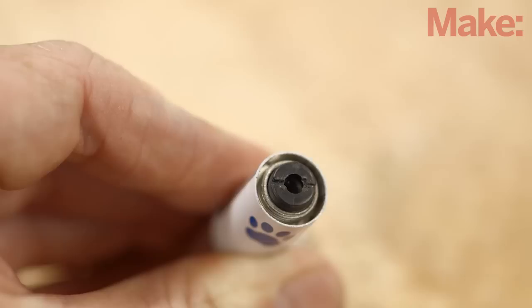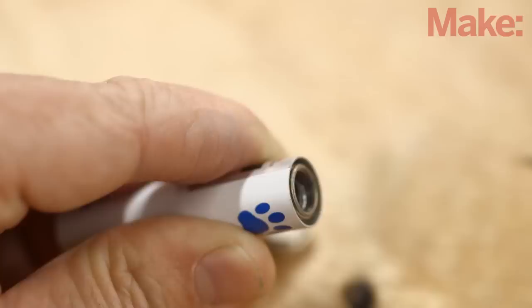To get the lens from the laser pointer, start by unscrewing the front cone of the laser. The front of this assembly is where the focus lens sits. Unscrew the small black plastic retainer in front of the lens and the lens will come free.